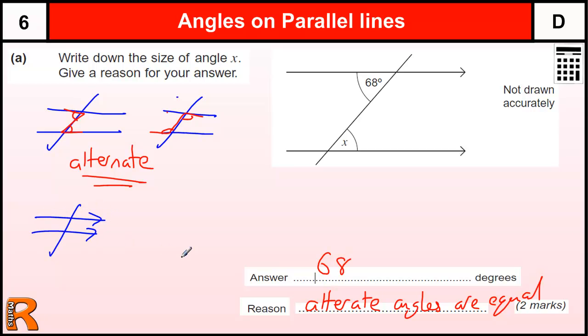The other two that you need to know as well are corresponding angles, where the angles are underneath like this. So these angles correspond with each other, they're in the same position, and that can be a backwards F, it could be upside down F, so it's the F shape, it's the corresponding angles, and they're the same.